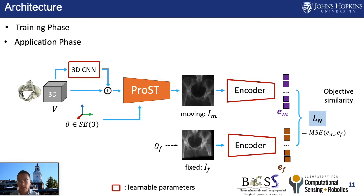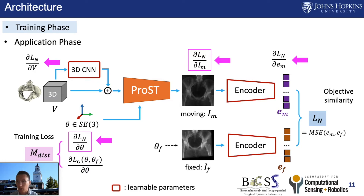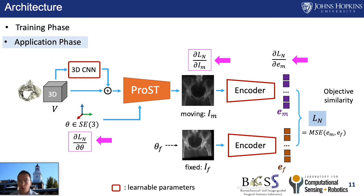We intentionally design this similarity to be the mean square error of two encodings: one from the moving image and the other from the fixed image. During the training phase, we optimize by learning from the training loss, which is the difference of the gradient with respect to the PROST parameter — one from the network, the other from the target convex function. Note that this training loss is applied at the beginning of the network, not at the end, and the network parameters are updated by the double backward function. During the application phase, all parameters are fixed and we optimize over the PROST parameter theta to perform the registration.